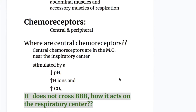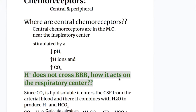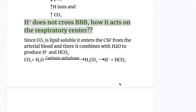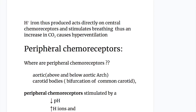Chemoreceptors are of two types: central and peripheral. The central chemoreceptors are in the medulla near the respiratory center, and are stimulated by a decrease in pH, increase in hydrogen ion concentration, and an increase in carbon dioxide. Hydrogen ions do not cross the blood-brain barrier, so carbon dioxide — being lipid soluble — enters the CSF from arterial blood and combines with water: CO₂ + H₂O → carbonic acid → H⁺ + HCO₃⁻. The hydrogen ions formed act directly on the central chemoreceptors and stimulate breathing. Thus, an increase in carbon dioxide causes hyperventilation.